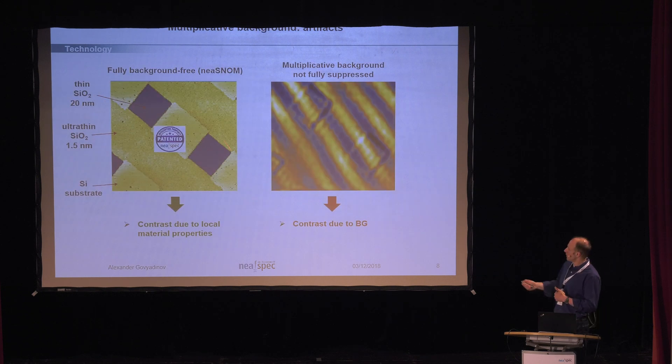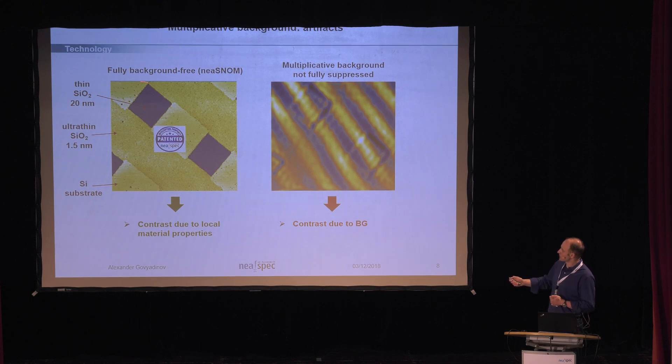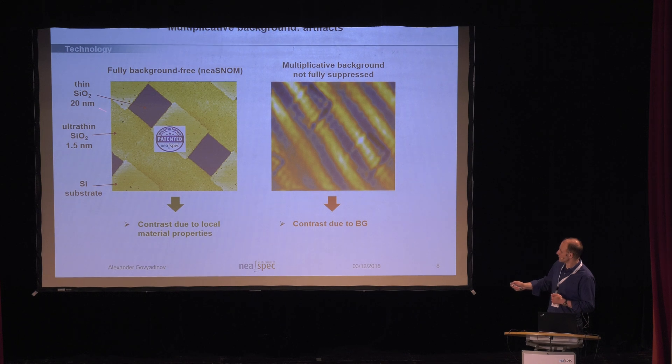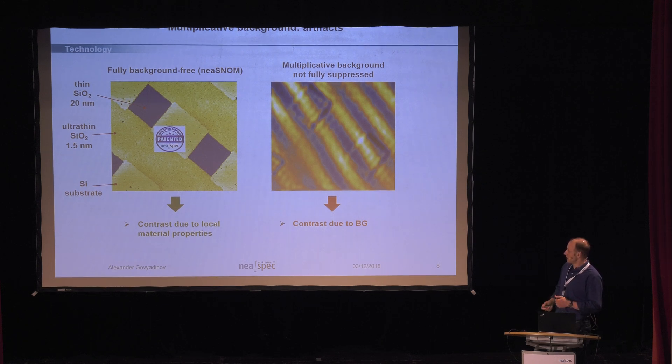Maybe it's not important. Let's see. So this is one of the examples. On a test sample, which is essentially a periodic array of squares made of silicon dioxide. This is the silicon dioxide square. This is the silicon substrate. The point here is that you can clearly see these squares of silicon dioxide. You can check the resolution if you do the line scan across. So this is what you will get if you fully suppress the background and this is how the image should look like. Now, if you don't suppress the multiplicative background, this is what you might see. So this image doesn't show you the local properties of the material. It just shows you some interference artifacts.